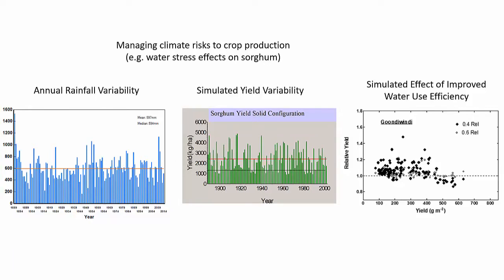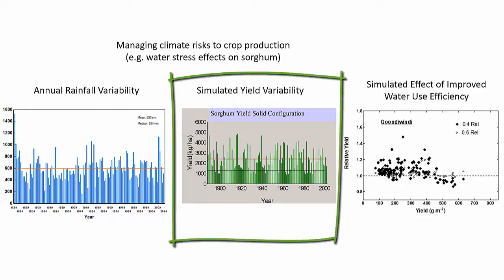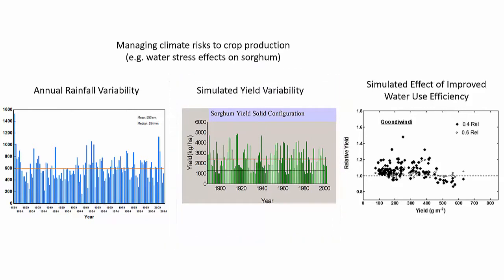With the crop growth model we can input that weather variability each year to the model and run simulations on the computer to give us a prediction of the amount of grain mass — which is essentially the yield for the crop. So we can predict for each of those seasons what the yield will be like.